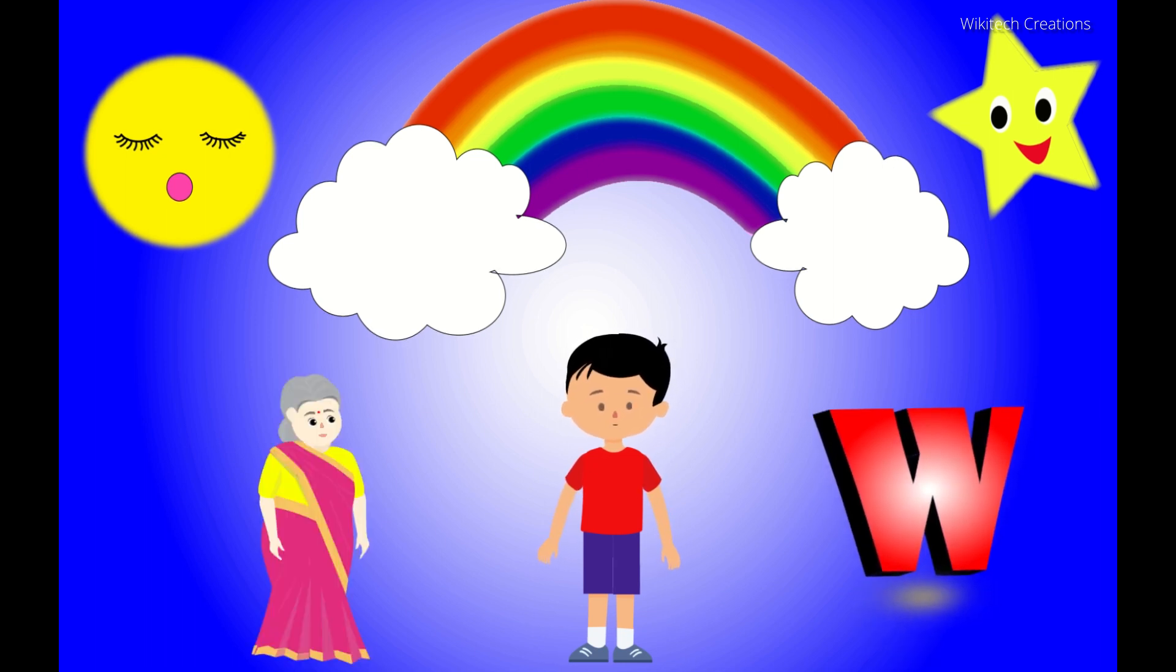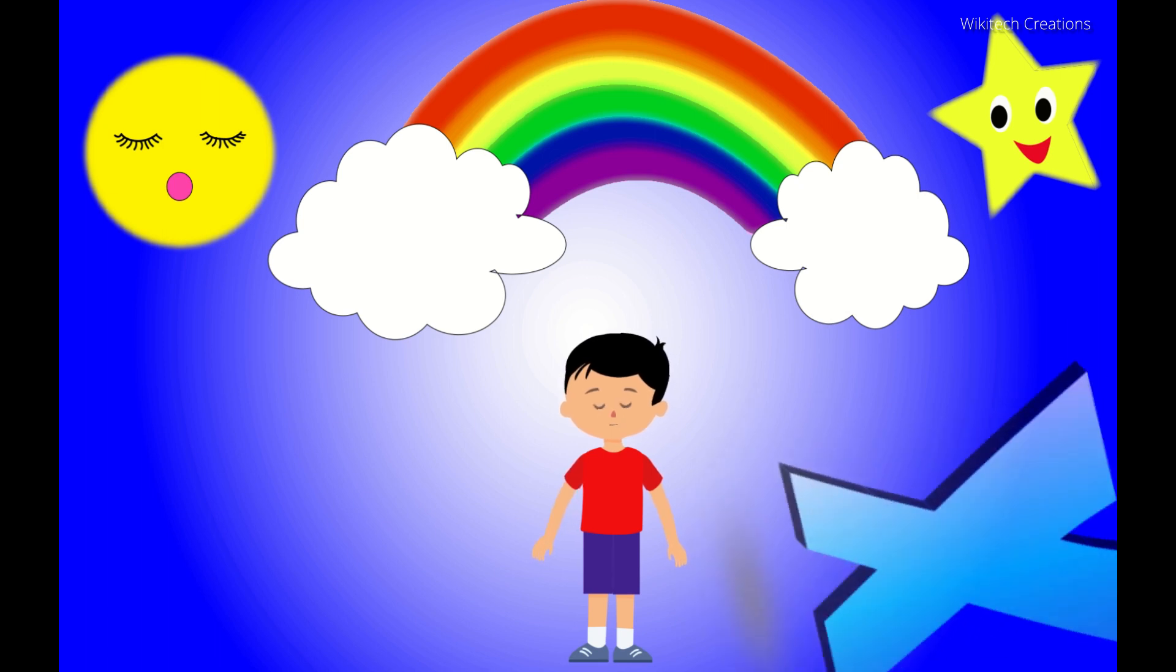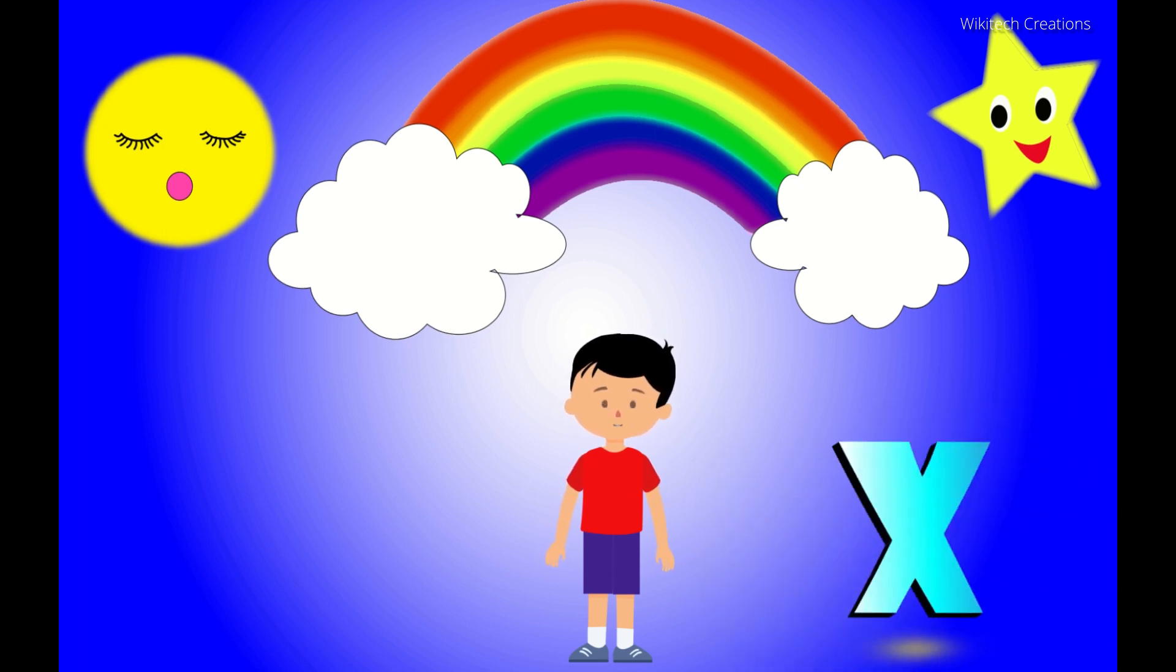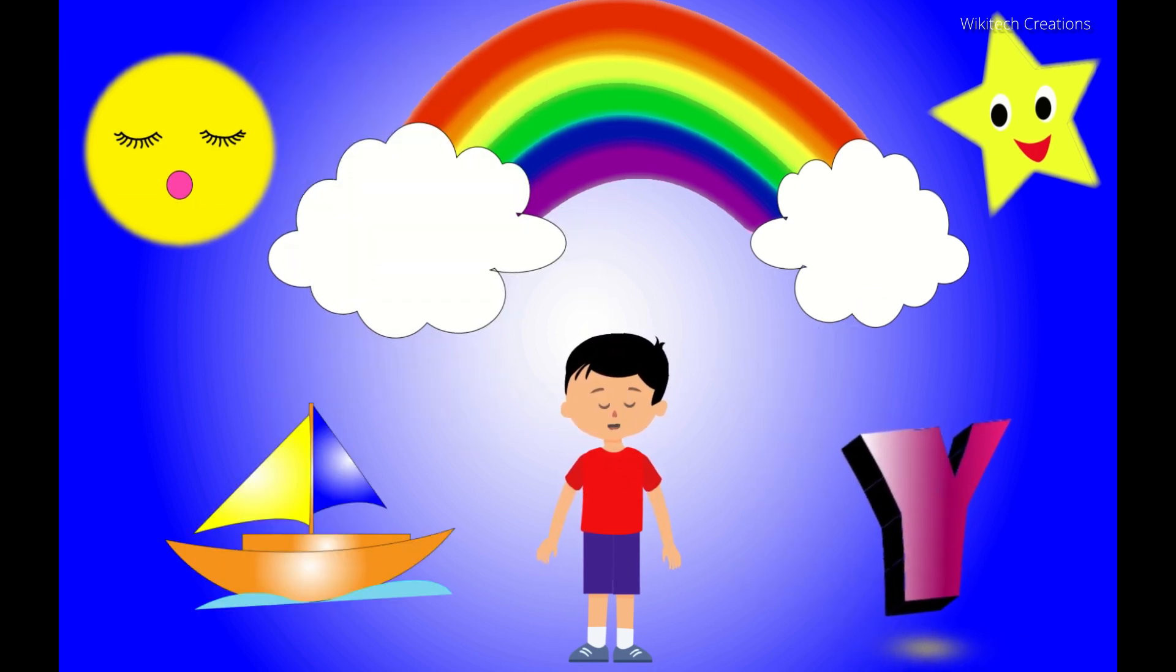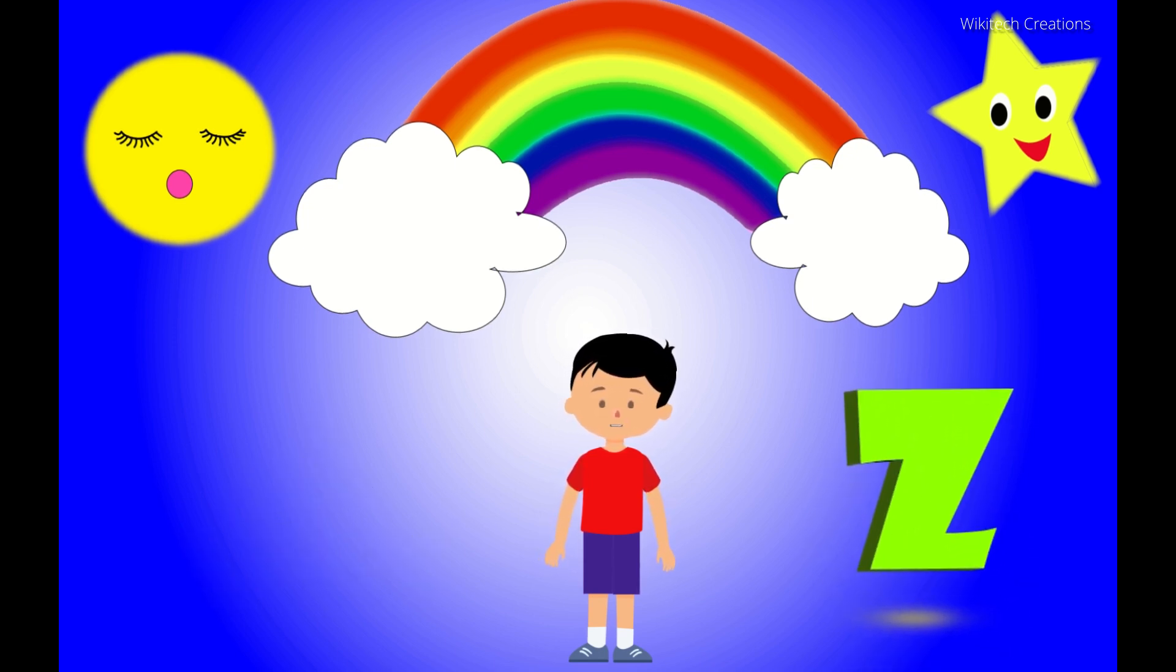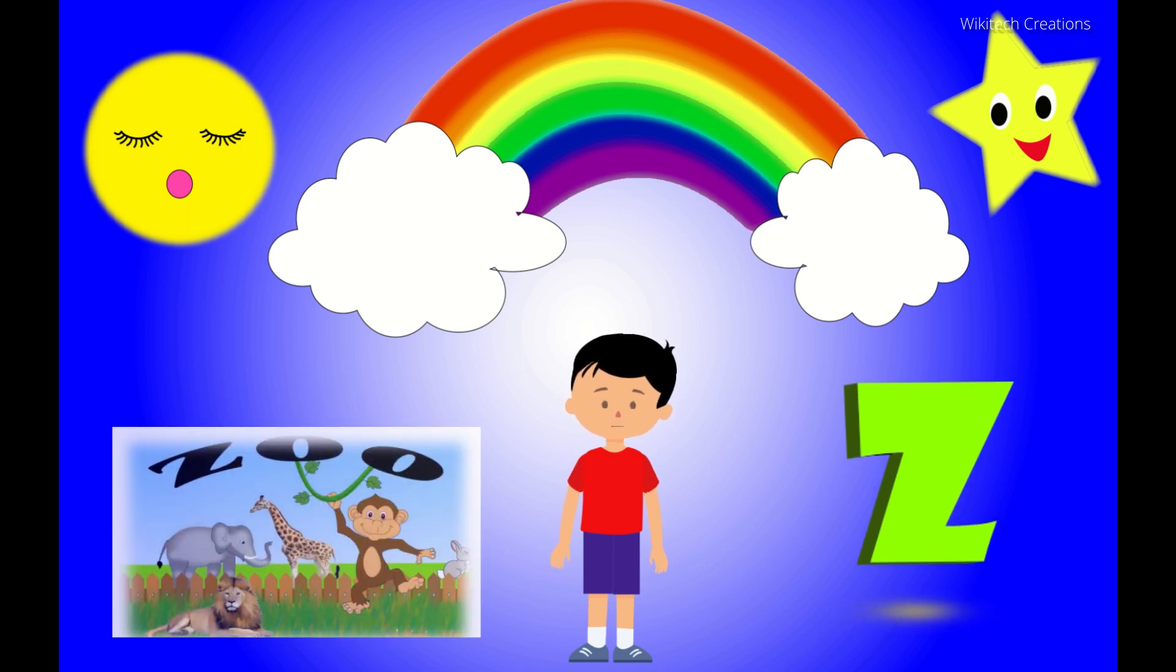This is letter X. X for X-ray. This is letter Y. Y for Yacht. This is letter Z. Z for Zoo.